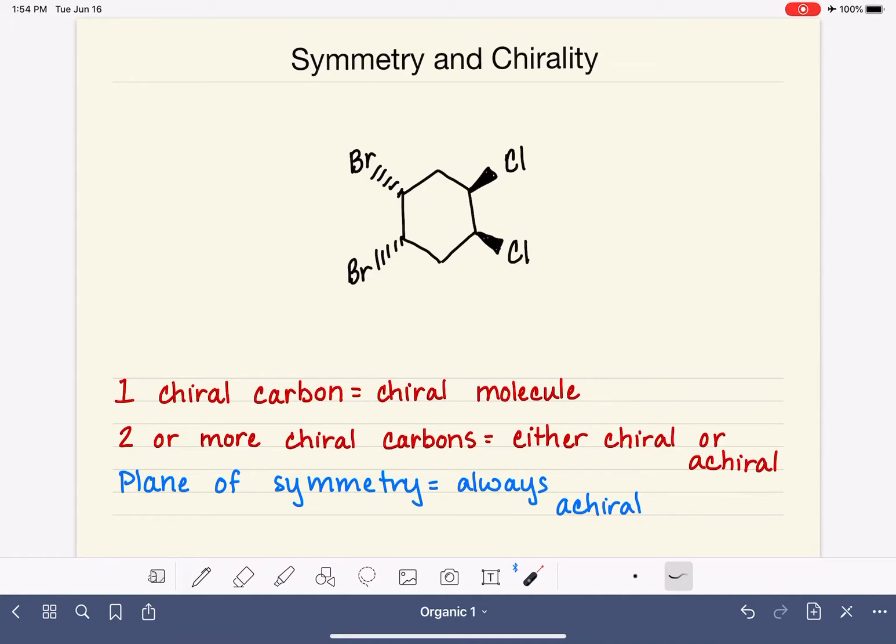For example, if we tried to draw a line through the molecule like this and we compare the left side to the right side, we can see that those two sides are not identical, mostly because of the differences between the bromine and the chlorine.